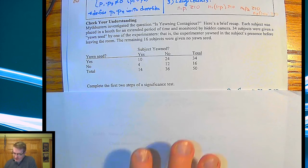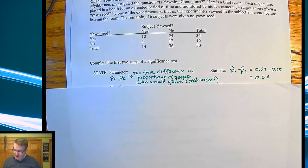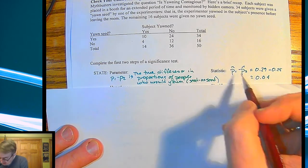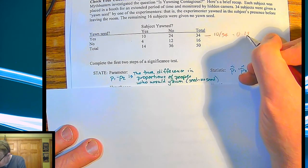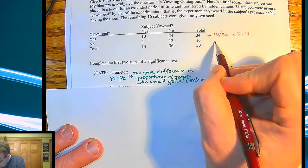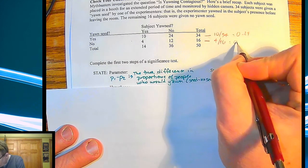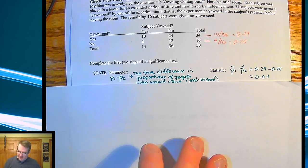Hey, welcome back. So here we go. First two steps. First of all, what's your parameter? P1 minus P2 is the true difference in proportions of people who would yawn, seed minus not having a seed. Our statistic that we got from up here is that P1 hat minus P2 hat is 0.04. Remember, 10 divided by 34 equals 0.29, a proportion of 29%. This one over here, I get 4 out of 16, and that is going to be 25%. I'm going to use pens from now on.